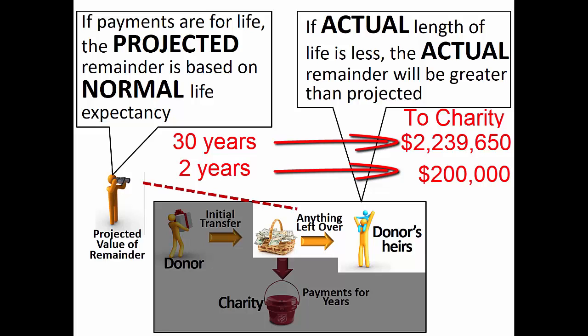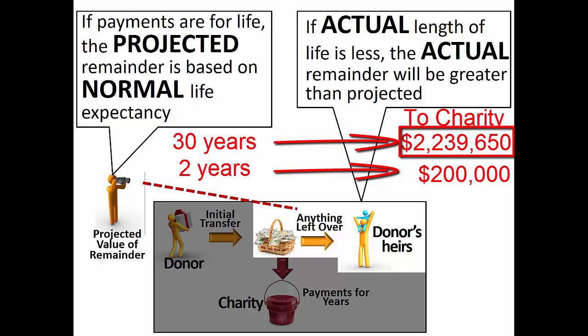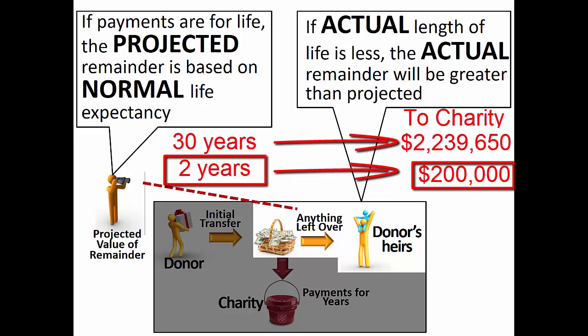Just as before, gift tax is paid based upon the projected transfer to the non-charitable beneficiary, not on the actual transfer. Consequently, if a donor transferred $2.2 million to the previous charitable lead trust with projected distributions to charity having a present value over $2.2 million, there would be no gift or estate tax on the transfer. This remains true even though the shortened life in reality would have resulted in $2 million being transferred to the heirs with no gift or estate taxes.